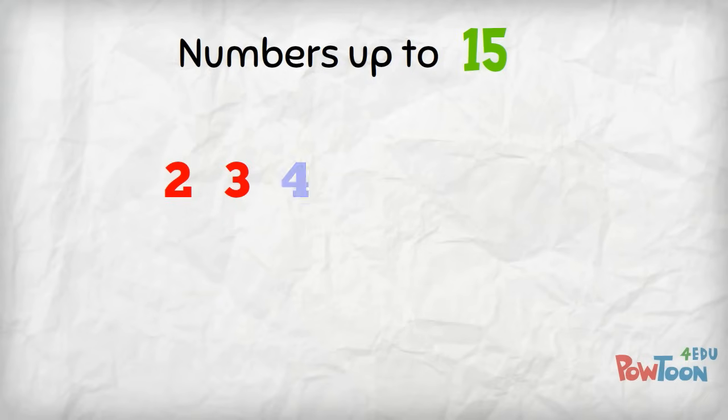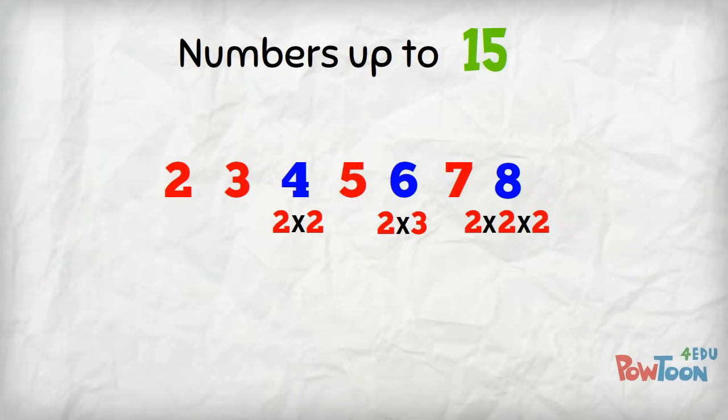3 is prime. 4 comes from 2 times 2. 5 is prime. We get 6 from 2 times 3. 7 is prime. 8 comes from 2 times 2 times 2.